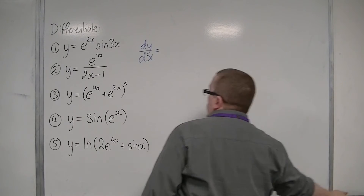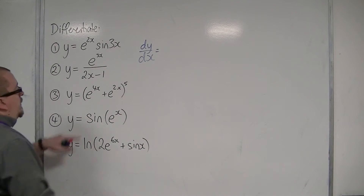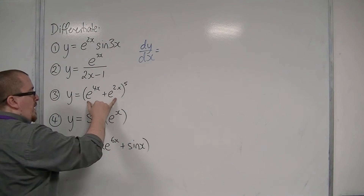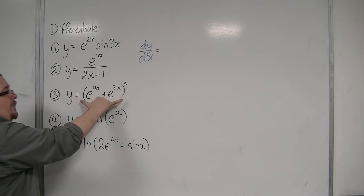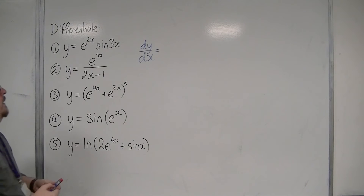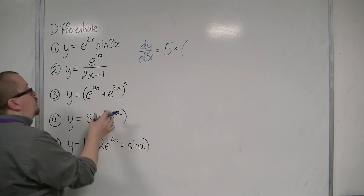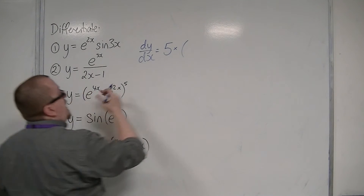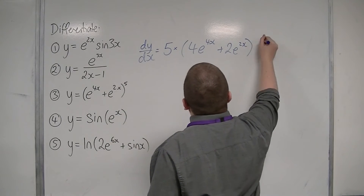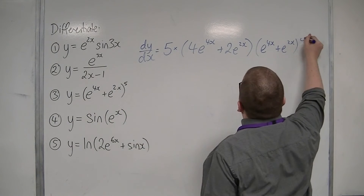For number 3, we have e to the 4x plus e to the 2x, all to the power of 5. We have one main big function of x inside another, so we're going to use the chain rule to differentiate the whole thing in one go. The 5 comes down to the front, the derivative of what's inside comes outside — so 4e^(4x) plus 2e^(2x) — and we're left with e^(4x) plus e^(2x) to the power of 4.